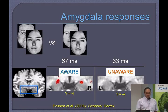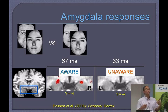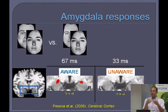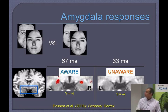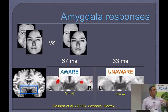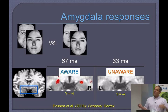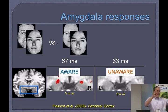We investigated whether amygdala responses differed between trials containing a fearful face versus no fearful face, as a neural signature for fear processing even in unaware mode. For 67-millisecond stimuli, where subjects were aware, we found bilateral amygdala activation. But when stimuli were unaware, regardless of threshold, we found no differential activation — just noise throughout the image without any systematic structure.